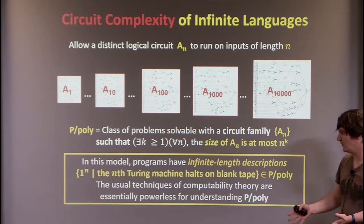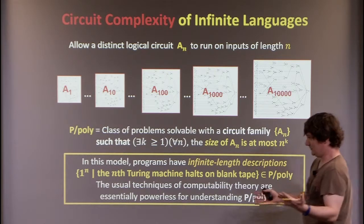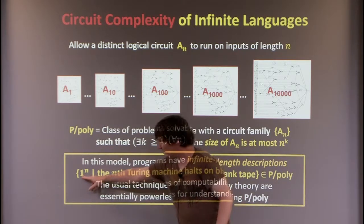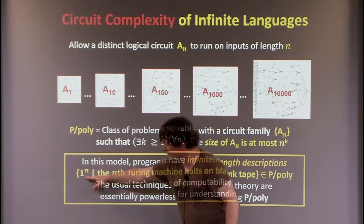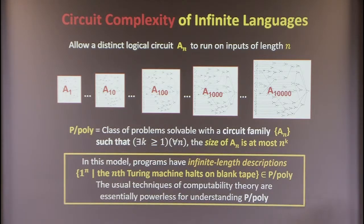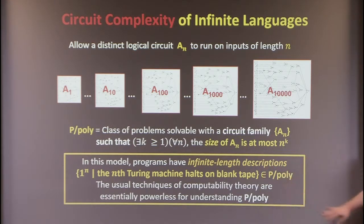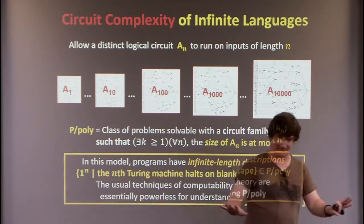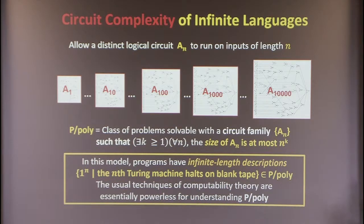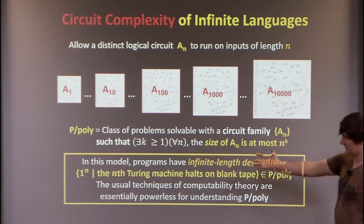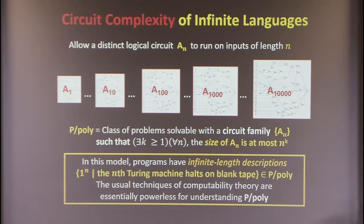For example, one problem which is well-known to be undecidable: take the subset of 1*, where I put the string of n ones if and only if the nth Turing machine, under some enumeration, halts on blank tape. This problem is undecidable — not too hard to see why; it follows from Rice's theorem or something like that.